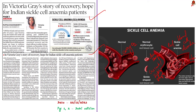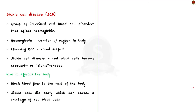Sickle cell disease is caused by a hemoglobin gene inherited from both parents. If only one parent carries hemoglobin S, it is called sickle cell trait — people with sickle cell trait can live a normal life without symptoms. It is important to remember the difference between sickle cell trait and sickle cell disease or sickle cell anemia.